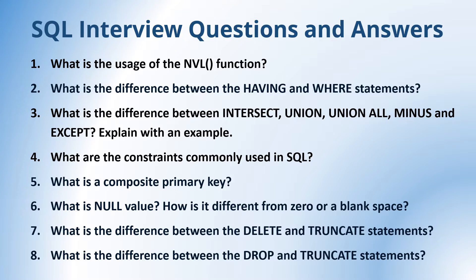What is a composite primary key? What is null value? How is it different from zero or blank space? And what is the difference between the DELETE and TRUNCATE statements? What is the difference between DROP and TRUNCATE statements? So these are the questions I am gonna explain now. Let's go to the answers.